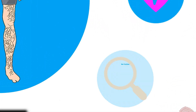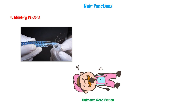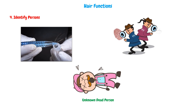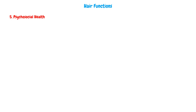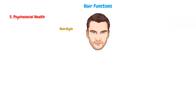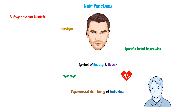The fourth function is to identify persons. So if we get a proper sample from the hair of an unknown dead person, we can use this sample in identifying them and use it in forensic analysis that gives us a lot of information. The fifth function is the psychosocial health. The hairstyle and the way that we take care of our hair will give us a specific social impression, and may be considered a symbol of beauty and health. So in general, the hair can give us an idea about the psychosocial well-being of the individual.